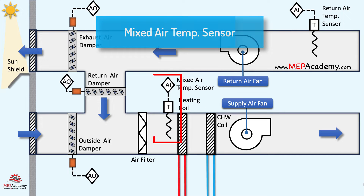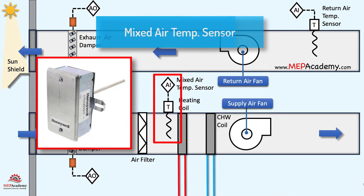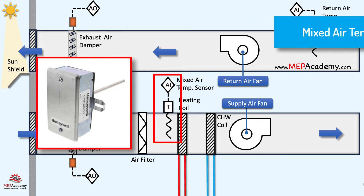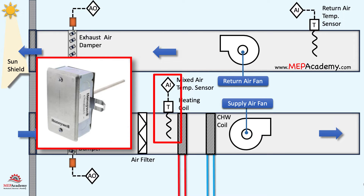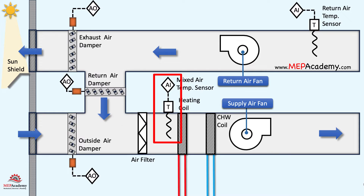The mixed air temperature sensor monitors the temperature of the air after it has been through the return air and outside air streams. This information is used to control the mixing of these two air streams to achieve the desired supply air temperature.